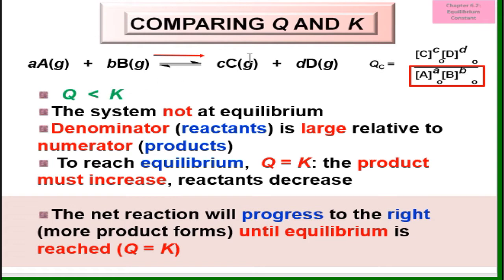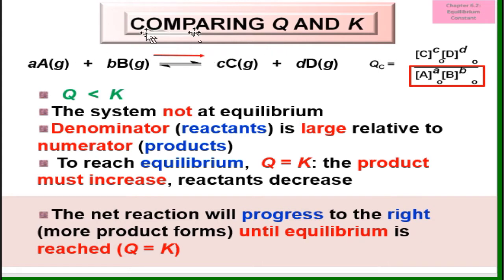If Q is smaller than K, the system is not at equilibrium — the denominator (reactant) is large relative to the numerator (product). So if you want to achieve equilibrium, meaning Q equals K, you have to increase the concentration of the product and decrease the concentration of the reactant. Since this is a reversible reaction, to decrease the reactant concentration you need to form more product. So the system will shift to the right — the net reaction will progress to the right for more product, until equilibrium is reached and Q equals K.